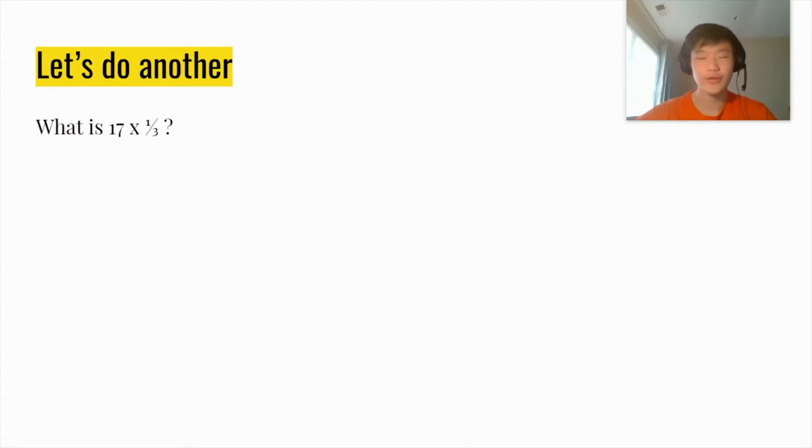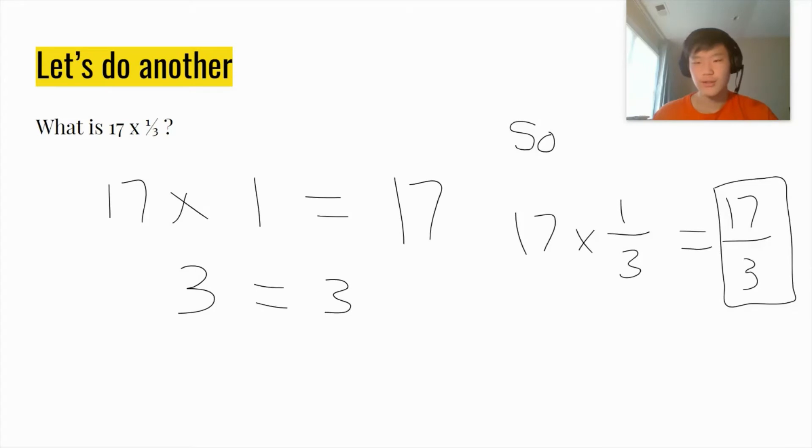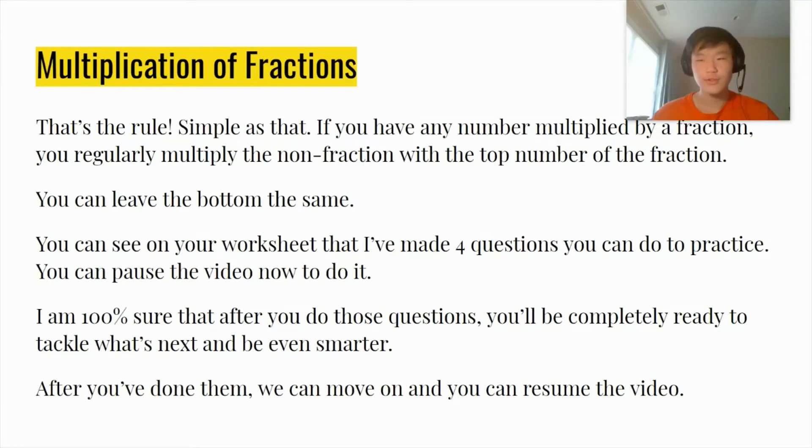Let's do another. What is 17 × 1/3? As you can see here, we separated the top and the bottom. So we have 17 × 1 at the top which is 17 and 3 is the same on the bottom. So we can do 17 × 1/3 = 17/3 because we have the numerator over the denominator. That's the rule. Simple as that. If you have any number multiplied by a fraction, you regularly multiply the non-fraction with the top number of the fraction. You can leave the bottom one the same. You can see on your worksheet that I made 4 questions you can do for practice. You can pause the video now to do them. I am sure that after you do these questions, you'll be completely ready to tackle on what's next. After you've done them, you can move on and resume video. You can pause here.